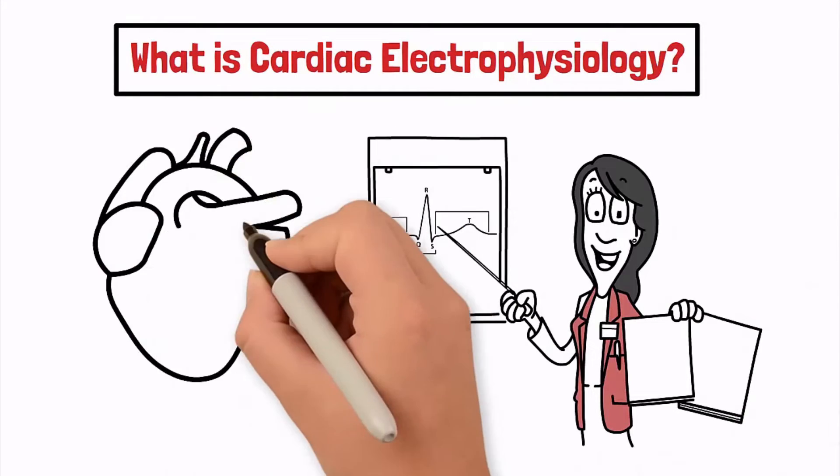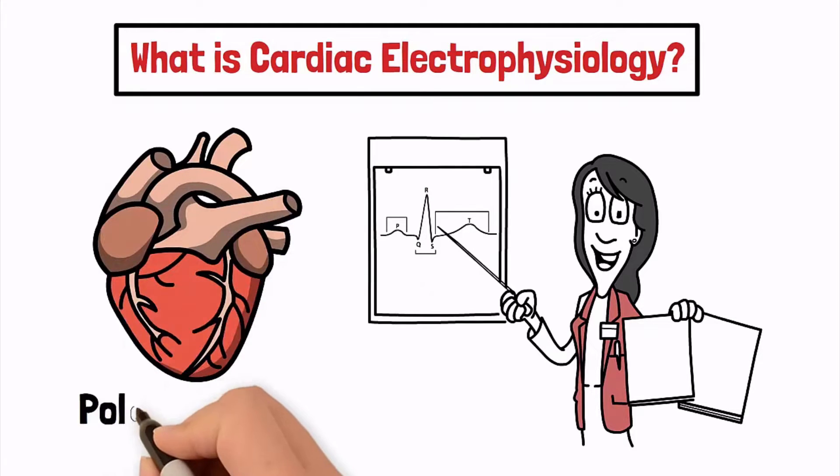Cardiac cells generate electrical impulses across the cell membrane, which creates a polarized state.